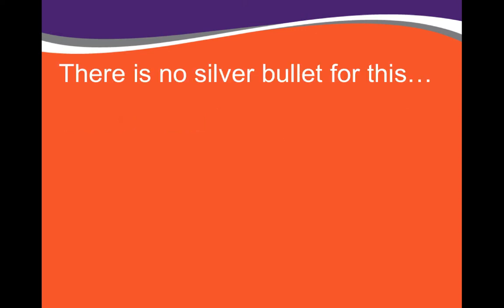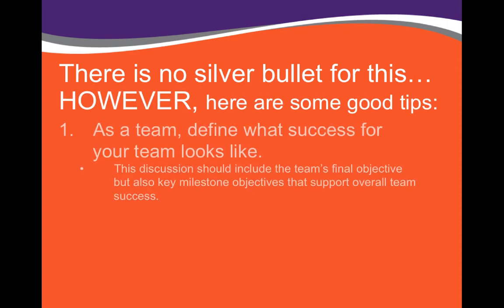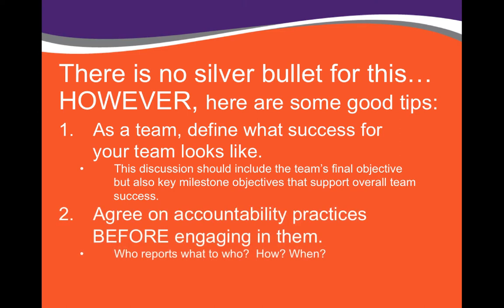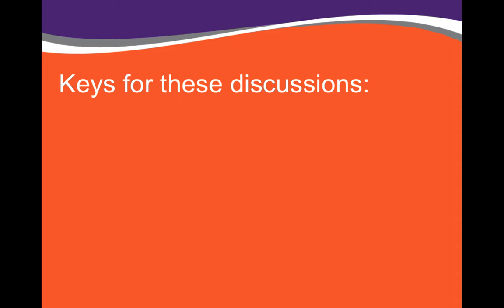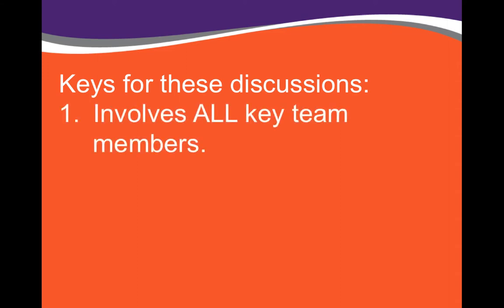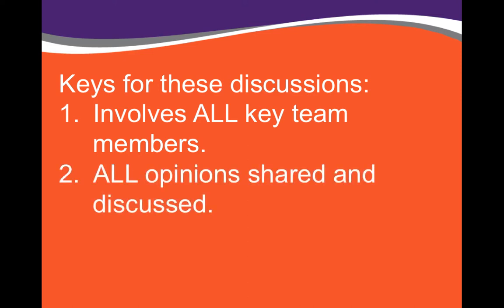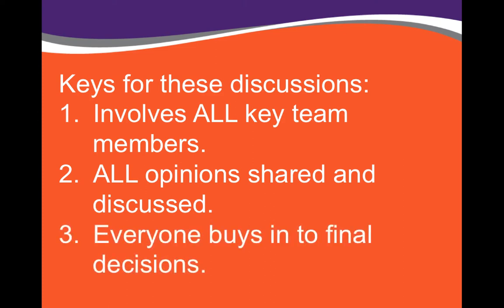There is no silver bullet for answering this, however there are some good tips. First, you should define what success looks like for your team. This discussion should include the team's final objective but also key milestone objectives that support overall team success. You should agree on accountability practices — who reports to whom, how and when — and have these discussions early on. Keys for having these discussions: involve all key team members, ensure all opinions are shared and discussed, and everyone needs to buy into the final decisions.